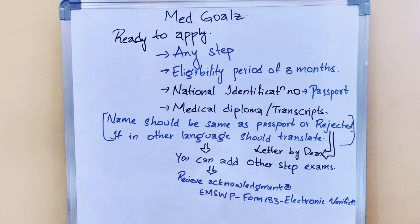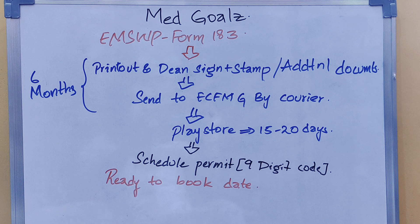You can add any step here — for example, if you want to take Step 1, you can also add Step 2 if you are willing to take both. You will then receive an acknowledgement form called EMSWP Form 183, which is for electronic verification of your college. Those who receive this form means their college is not electronically registered with the site. For them, they should print out Form 183, fill it, get a Dean's signature and stamp, and can also add additional documents like a graduation certificate.